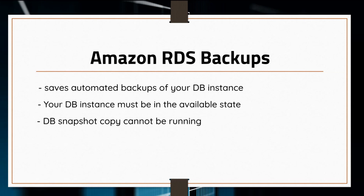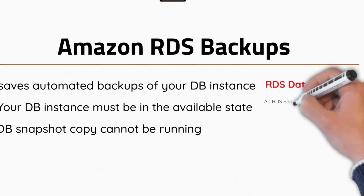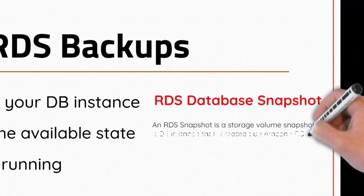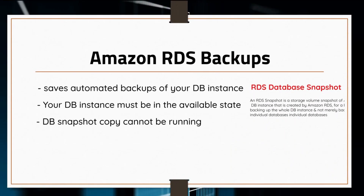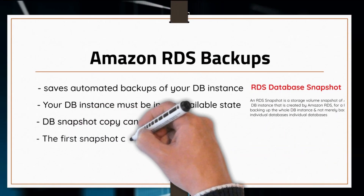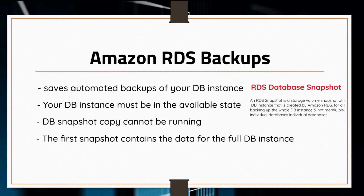You cannot have two backups running simultaneously for the same database instance. You can also back up your database manually by doing a database snapshot. An RDS snapshot is a storage volume snapshot of the database instance created by Amazon RDS for backing up the whole database instance, not just an individual database. The first snapshot of the database instance contains the full database instance, and subsequent snapshots of the same database instance are incremental.